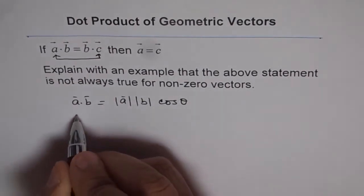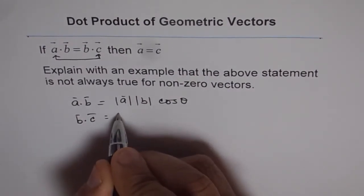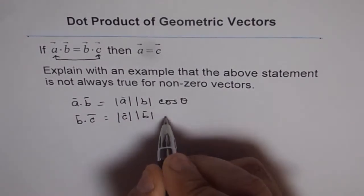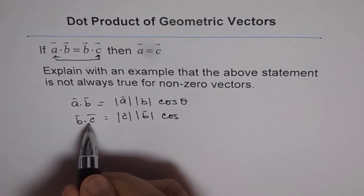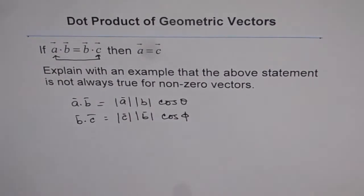Now, B dot C, vector B dot C will be magnitude of, let me write C on this side now, times B, and cosine of the angle between these two vectors. So that angle could be phi, different. Do you see that?